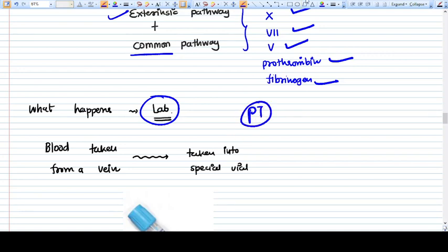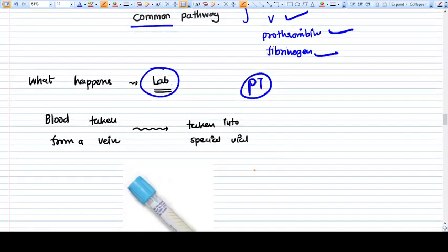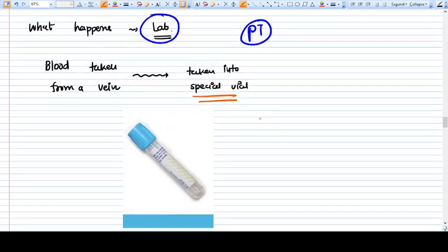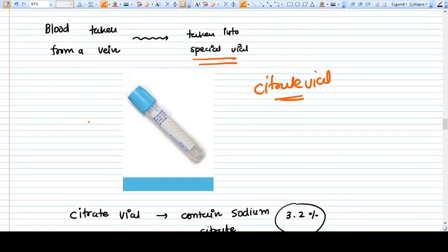What happens in the lab when you give a sample for PT? It's very important - if you understand this, there will be no problem understanding PT and APTT. The blood is taken from the vein into a special vial called citrate vial. This citrate vial has a bluish color.